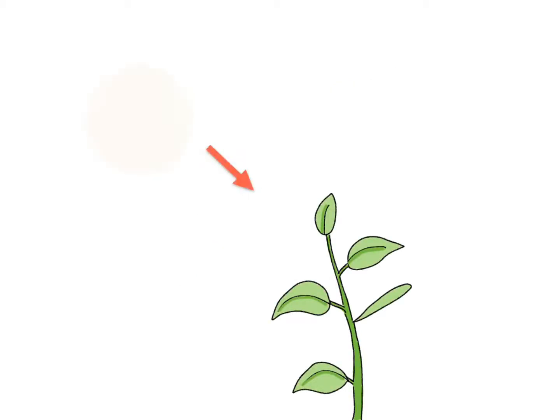As sunlight falls on the leaf surface, the chlorophyll, which is the green pigment present in the plant leaf, traps the energy in it. Interestingly, the green color of the leaf is also attributed to presence of chlorophyll.